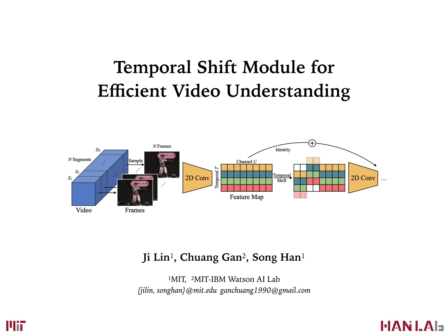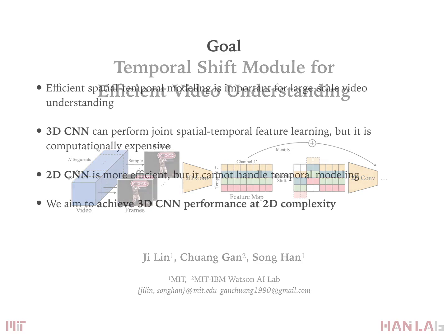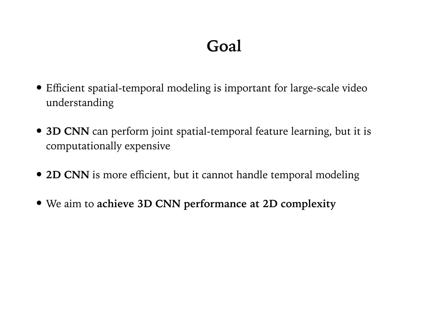This is a video illustrating our temporal shift module for efficient video understanding paper. Video is the biggest big data, so efficient spatial-temporal modeling is important for large-scale video understanding. 3D CNN can perform joint spatial-temporal feature learning, but it is computationally expensive. 2D CNN is more efficient, but it cannot handle temporal modeling. We aim to achieve 3D CNN performance at 2D complexity.